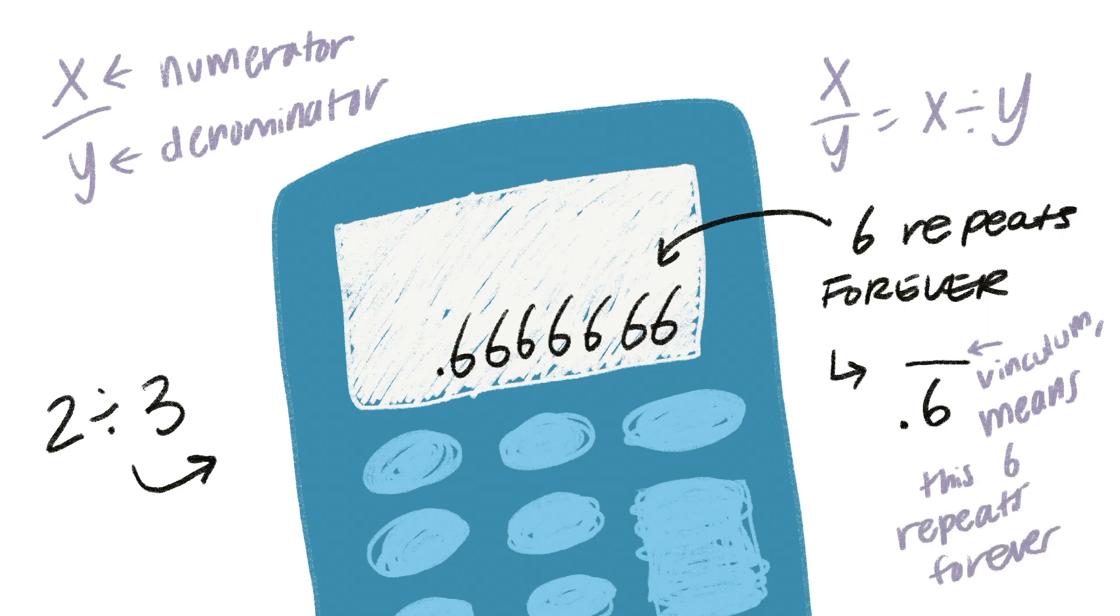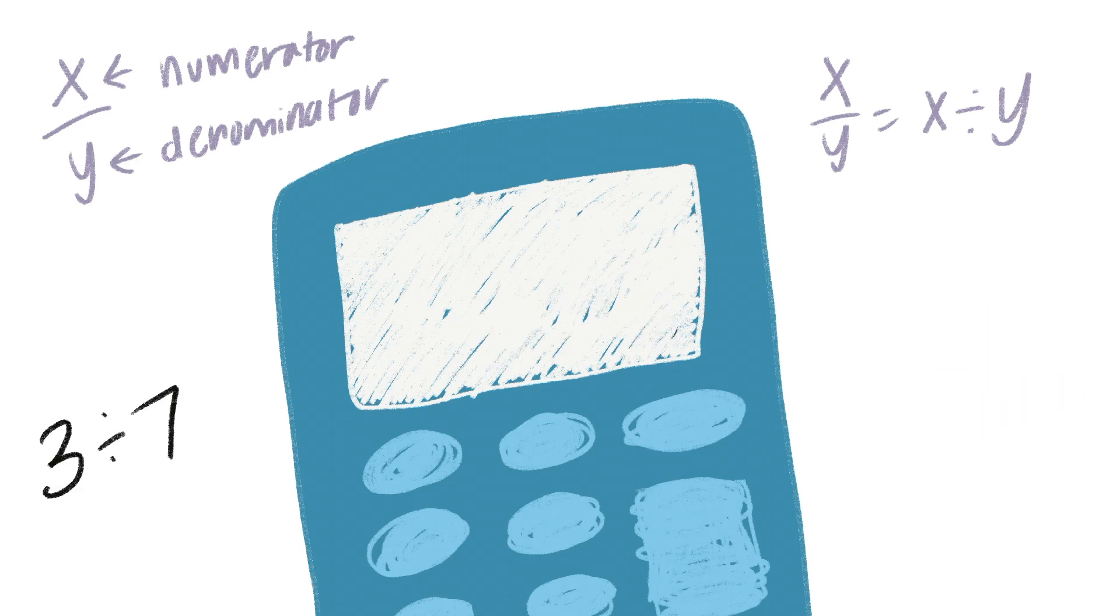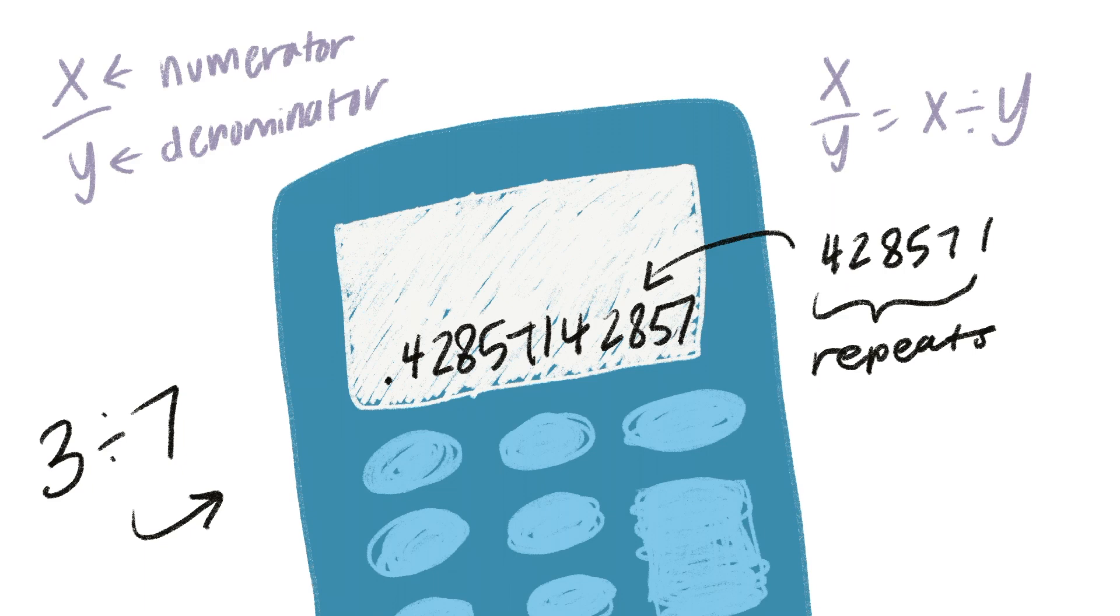Going back to the previous example, you can write 0.6 repeating as 0.6 with a vinculum. Try putting 3 over 7 in your calculator. We get a repeating pattern of 428571. Because this section repeats over and over again, just place that vinculum we talked about earlier and make it stretch over these six digits to show that the actual answer is 0.428571 repeating.